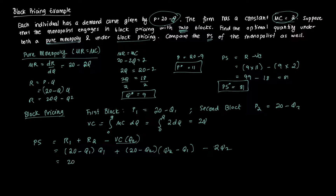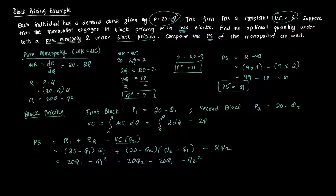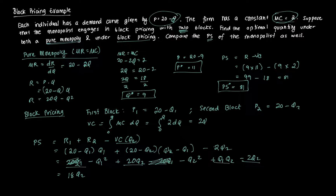Simplifying by expanding via FOIL: 20Q1 minus Q1 squared plus (20Q2 minus 20Q1 minus Q2 squared plus Q1Q2) minus 2Q2. The 20Q1 terms cancel. Combining like terms gives 18Q2 plus Q1Q2 minus Q1 squared minus Q2 squared as the producer surplus expression.